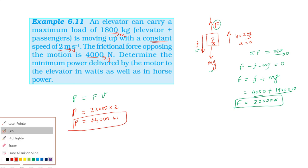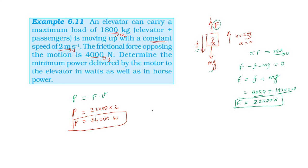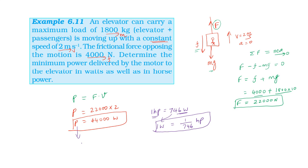Power required is 44000 watts. Since 1 horsepower is equal to approximately 746 watts, we divide 44000 by 746, which gives approximately 59 horsepower.